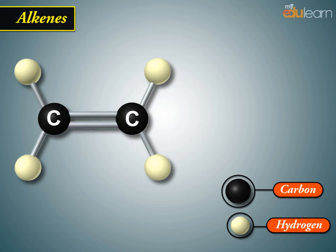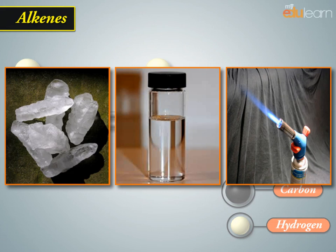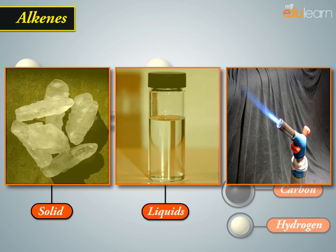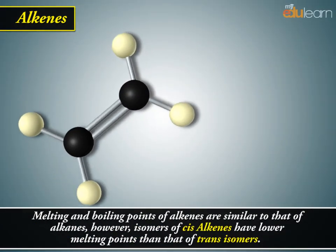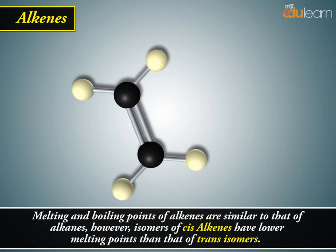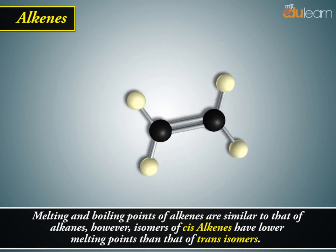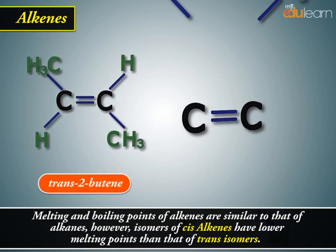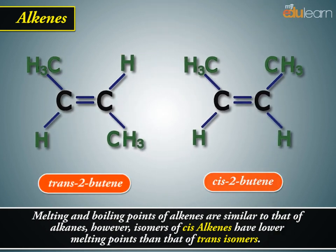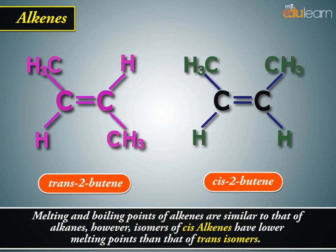At room temperature, alkenes exist in all three phases: solid, liquids, and gases. Melting and boiling points of alkenes are similar to that of alkanes. However, isomers of cis-alkenes have lower melting points than that of trans-isomers.